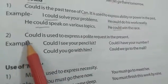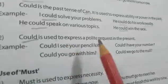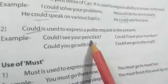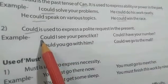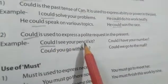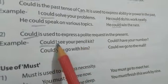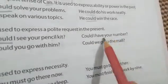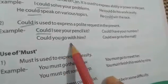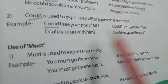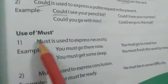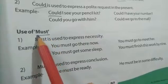Could is also used to express a polite request in the present time. For example: 'Could I see your pencil kit?' — I am requesting to see it in a polite way. 'Could you go with him?', 'Could I have your number?', 'Could we go to the mall?' — in all these cases we are politely requesting the other person, so we use could.